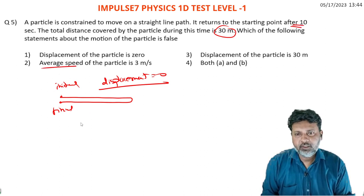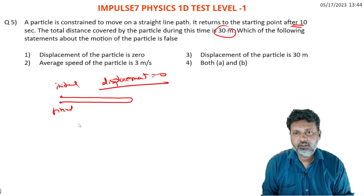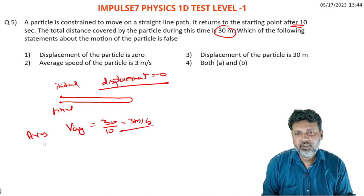Average speed: total distance 30 meters upon total time 10 seconds equals 3 meters per second. This is the average speed.